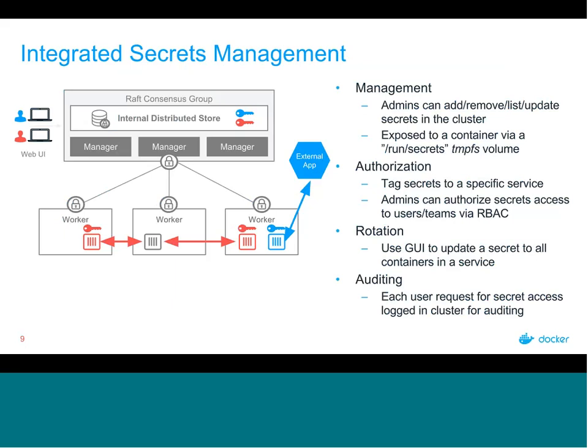Each secret is exposed to each task within a service via a default /run/secrets tmpfs volume. Importantly, this is in memory — nothing is saved to disk. The secret is exposed to the container as a readable plain text file, but the secret is encrypted and fully in memory. Within Docker Data Center you can tag secrets to a specific service, so only that service is allowed to see the secret — no other service on the cluster can grab them.